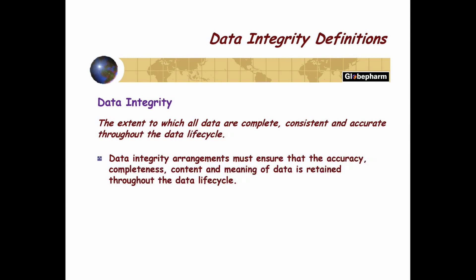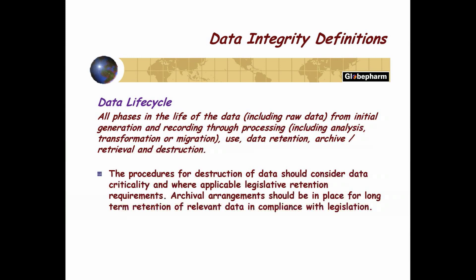You need to ensure the accuracy, completeness, and meaning of data and metadata throughout the data life cycle. If you're making an API with a three-year expiration date, you can't keep data for just three years — because that API goes into tablets with a four-year expiration date. GMP requires keeping data for the expiration date plus one year, or two years in Europe. So that's four plus one equals five, plus your three equals eight years minimum. Then your lawyers will say keep it forever. You have to think about usage and data retention time.